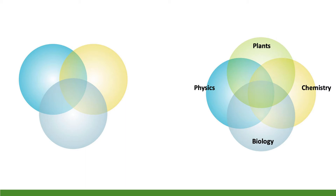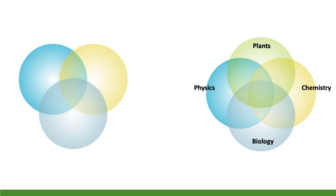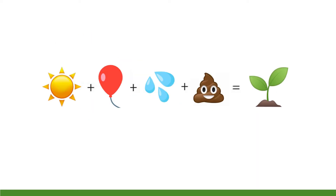Plants not only benefit from soil health but also influence soil health — that's why we grow cover crops and green manures. We could argue there should be a fifth circle in this Venn diagram including livestock. The role of plants in influencing strategies to improve soil biology is key. If we want to feed soil biology, we're dependent on plants and dependent on photosynthesis.